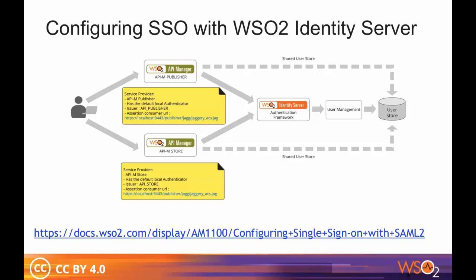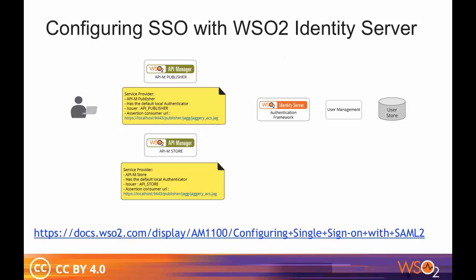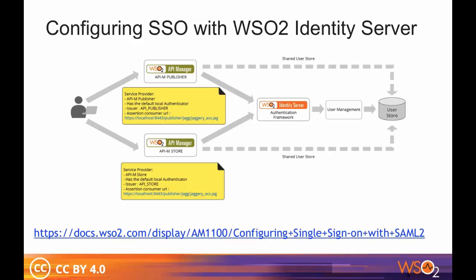WSO2 Identity Server acts as an identity service provider of systems enabled with single sign-on, while the web applications act as SSO service providers. Using this feature, you can configure SSO across the API Publisher and store, and access the API Store or API Publisher in a single authentication attempt. When users log into the application, they are redirected to the identity server where the user information is stored, and a SAML response is sent to the application so that the login is completed.